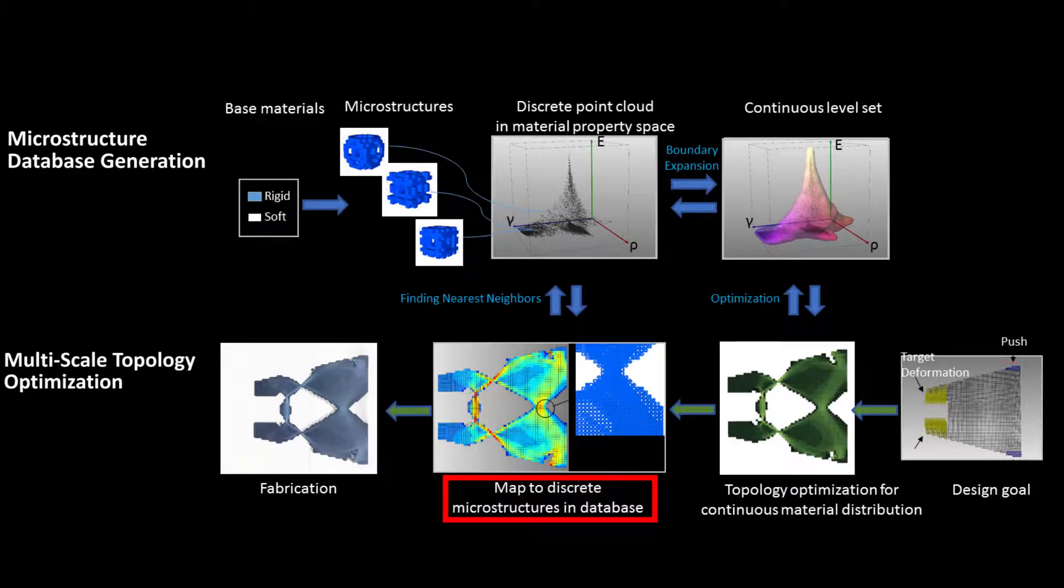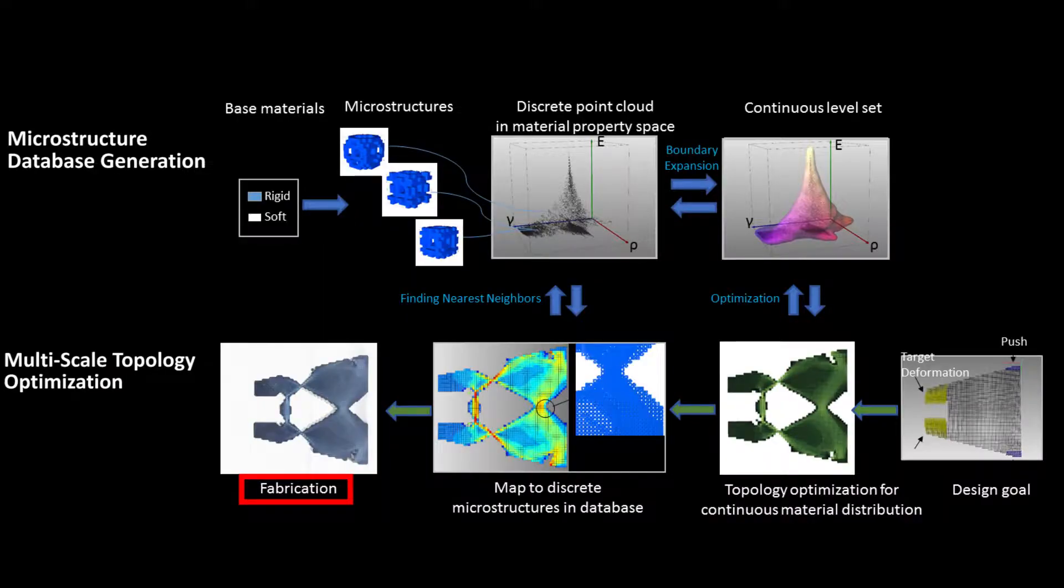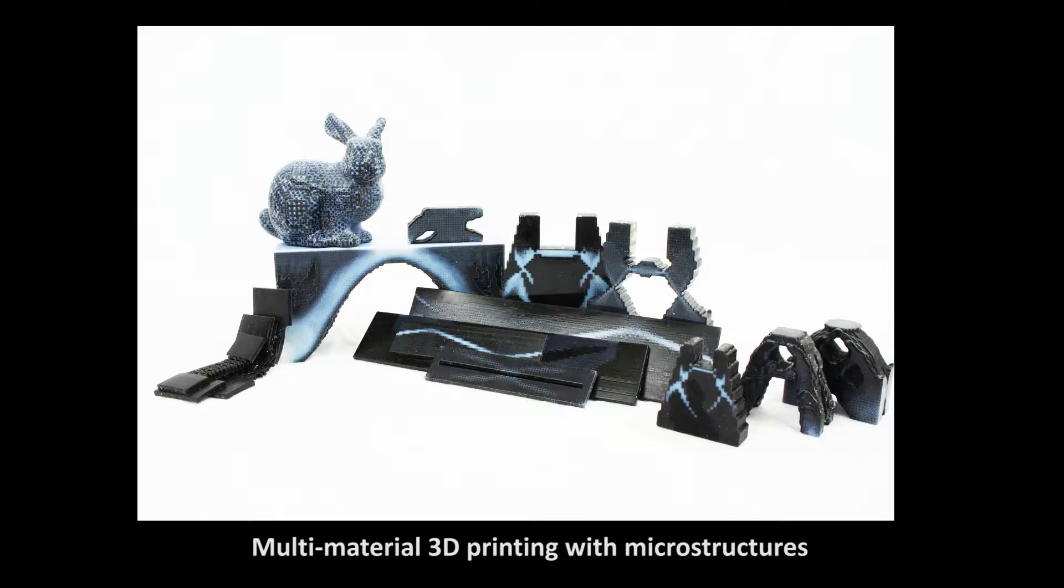After the algorithm converges, we map the optimized continuous material distribution to a set of discrete microstructures from the database by minimizing the L2 norm. With the mapped discrete microstructure configurations, we are able to 3D print various types of objects with optimized material distributions.